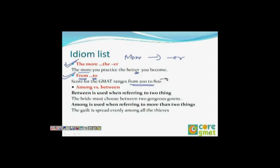On GMAT, they typically give a long sentence in the 'from X to Y' structure, where X can itself be a long sentence. So first identify 'to' in the sentence, then read X. That is the key approach.